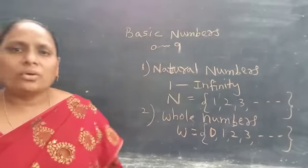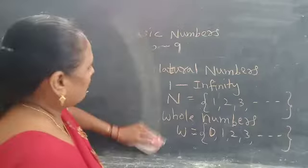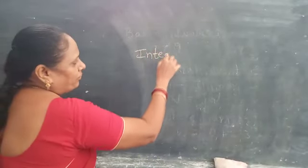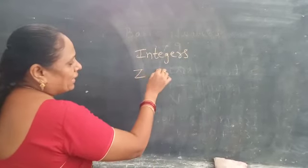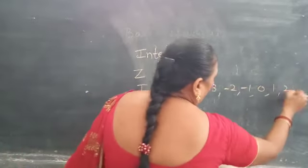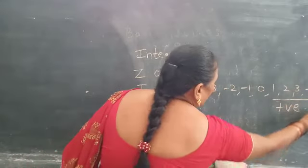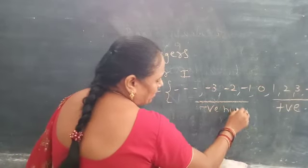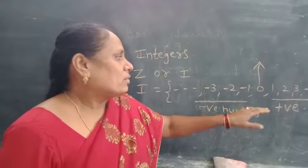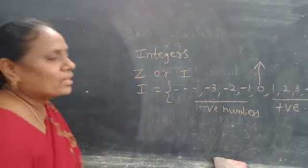The least whole number is 0 and the greatest whole number does not exist. Next, we go to the combination of whole numbers with negative numbers. Such type of numbers are called integers. These are represented by the letter Z or I, written as: minus 3, minus 2, minus 1, 0, 1, 2, 3 and so on. Numbers after 0 are called positive numbers, numbers before 0 are called negative numbers, and 0 is neither negative nor positive. The least positive number is 1 and the highest negative number is minus 1.